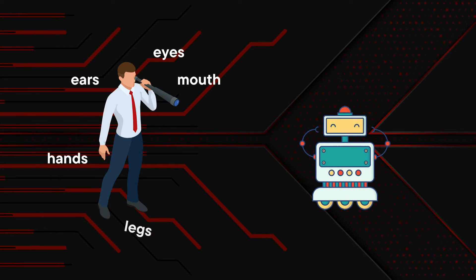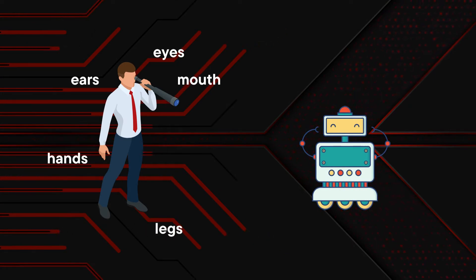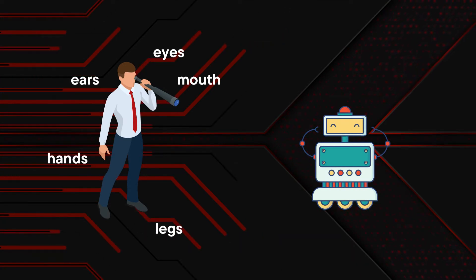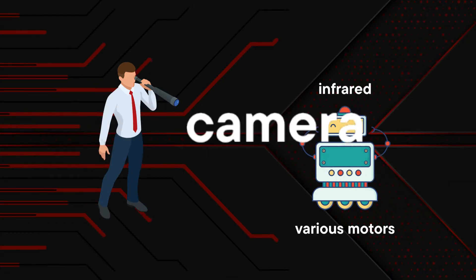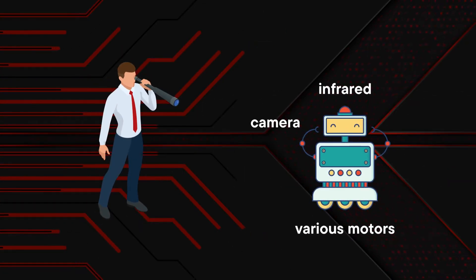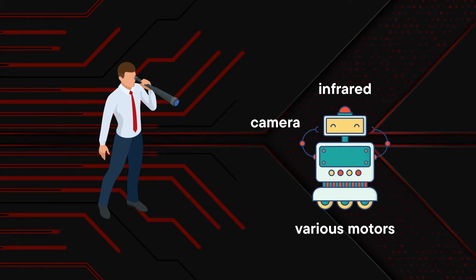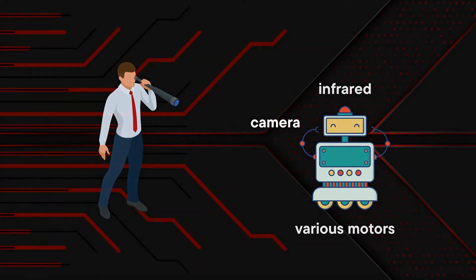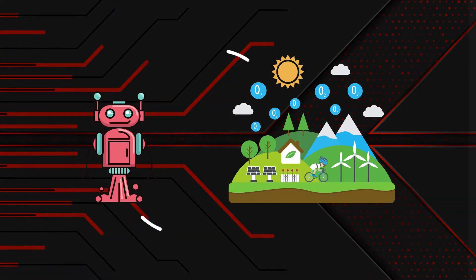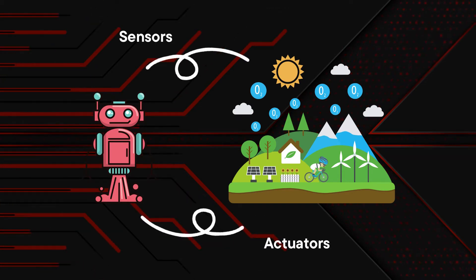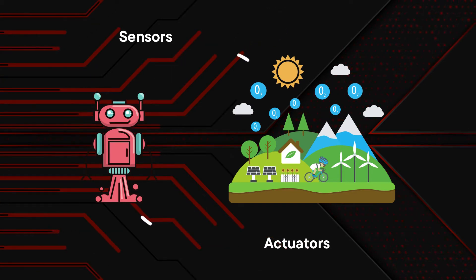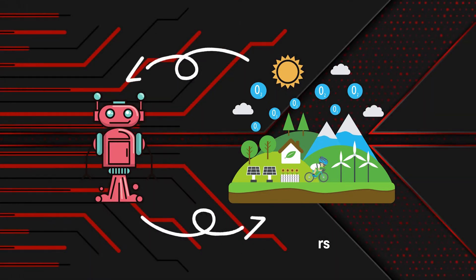A human agent senses or perceives using eyes and ears, and acts using legs, mouth, and hands. A robotic agent senses or perceives using cameras and infrared, and acts using various motors. The notion of an artificial agent is that it will constantly sense the environment and act based on it.